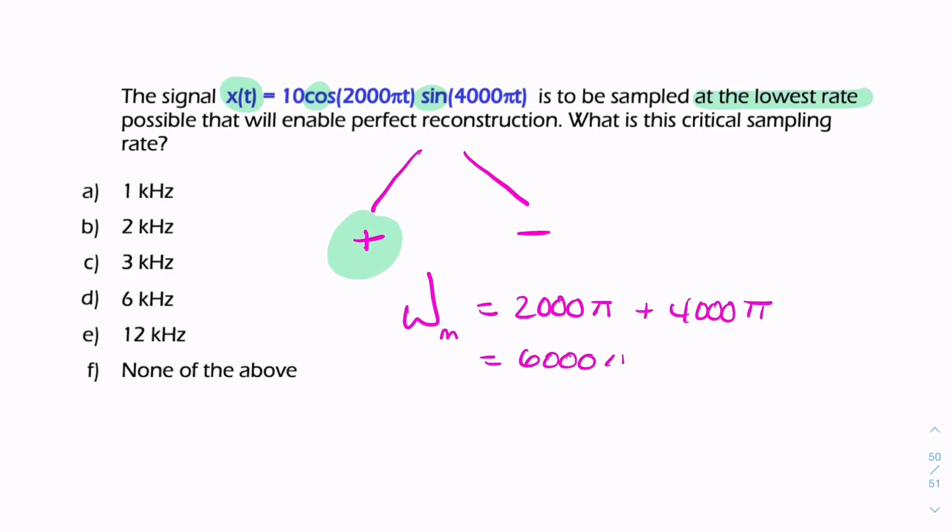So therefore the frequency is that divided by 2π, so that's 3000 Hertz. So the Nyquist rate will be twice that - the Nyquist rate will be two times three thousand, six kilohertz. Now it says the lowest rate possible that will enable perfect reconstruction.